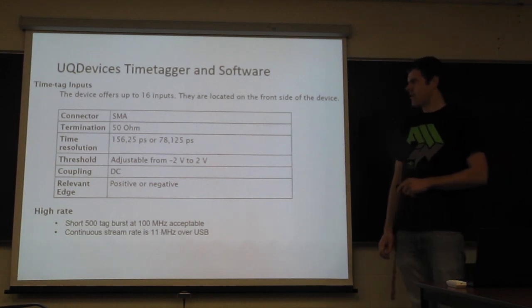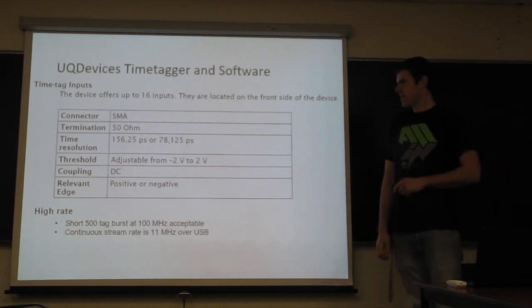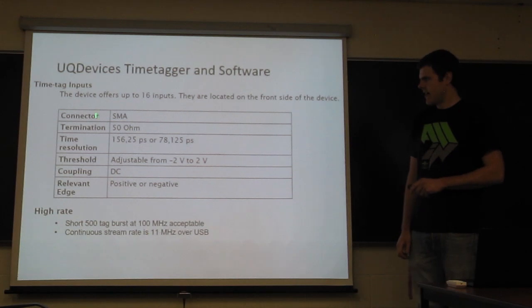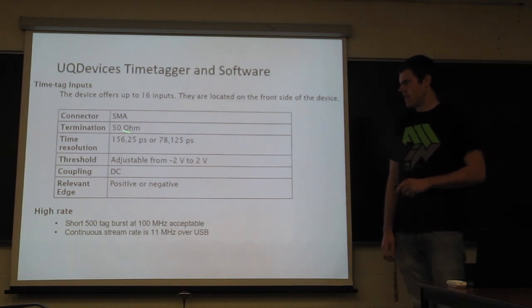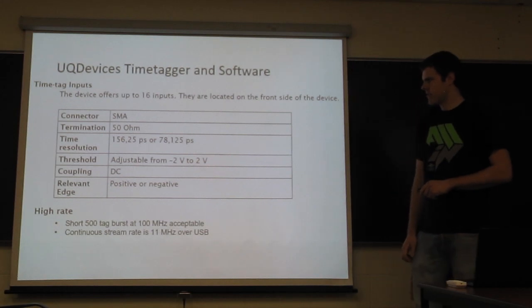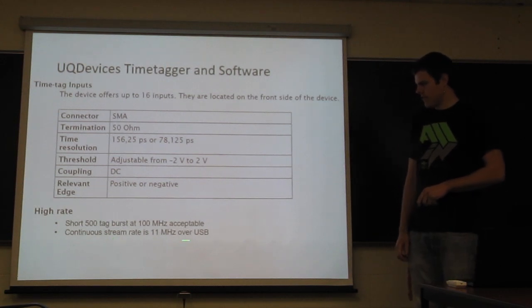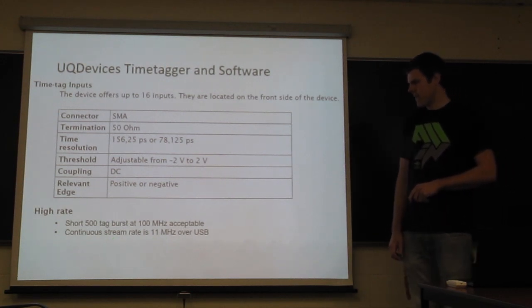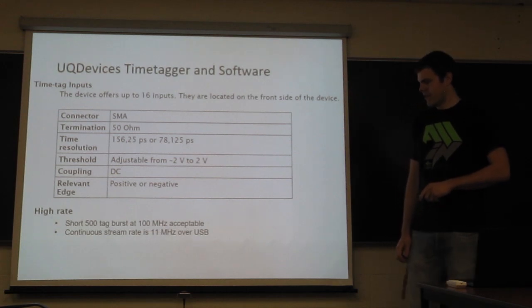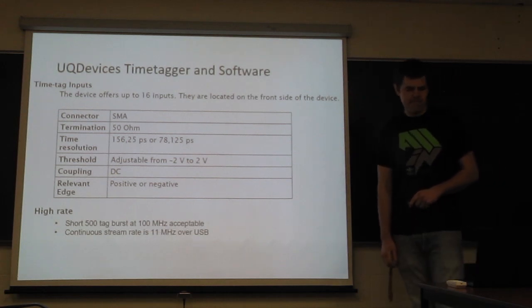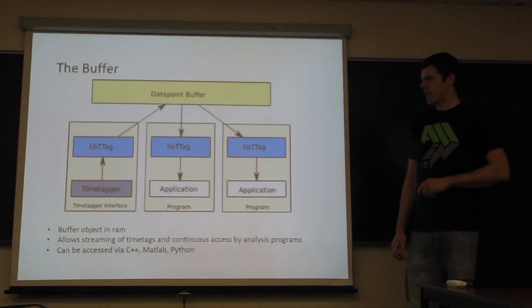So the UQ devices time tagger, for instance, has SMA inputs. They're 50 ohm terminated. It has two different time resolutions with an adjustable threshold. Additionally, continuous stream rate is only about 10 megahertz, but it can take small bursts of much higher rates.